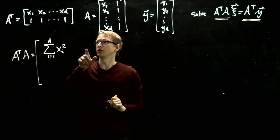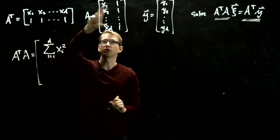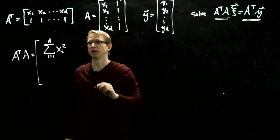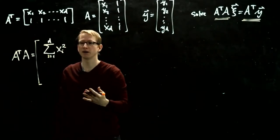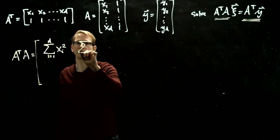The second entry on the top is the first row times the second column of A, and that's x1 times 1 plus x2 times 1. In other words, we're just summing up all of the different x values.